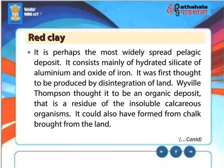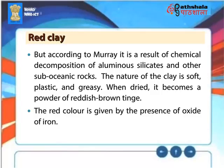Red clay is perhaps the most widely spread pelagic deposit. It consists mainly of hydrated silicate of aluminium and oxide of iron. It was first thought to be produced by disintegration of land. Weyville Thompson thought it to be an organic deposit — a residue of insoluble calcareous organisms. It could also have formed from chalk brought from the land. But according to Murray, it is a result of chemical decomposition of aluminium silicates and other sub-oceanic rocks. The nature of the clay is soft, plastic, and greasy. When dried, it becomes a powder of reddish-brown tinge, the red colour given by the presence of oxide of iron.